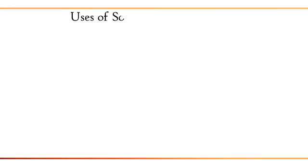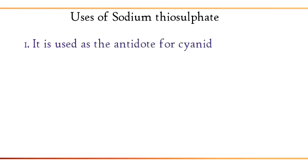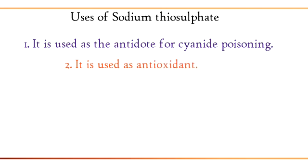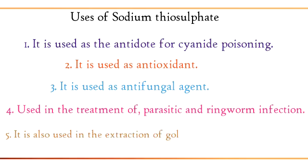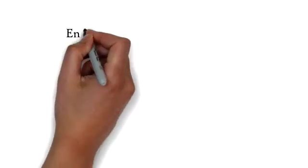Now, going on to the uses of sodium thiosulfate: 1. It is used as the antidote for cyanide poisoning, 2. It is used as antioxidant, 3. It is used as antifungal agent, 4. Used in the treatment of parasitic and ringworm infection, 5. It is also used in the extraction of gold and silver from their ores.